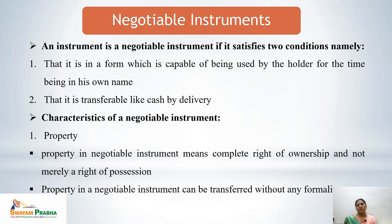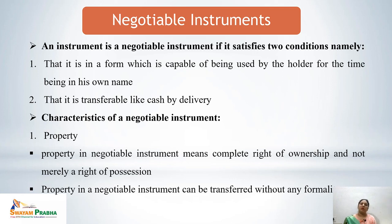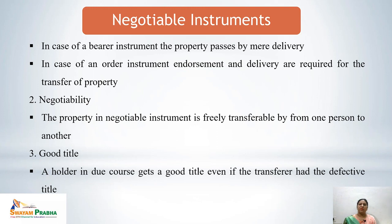The first characteristic of a negotiable instrument is property. Property in a negotiable instrument means the complete right of ownership, not merely possession. Simply handing over a cheque to keep does not make it negotiable. Negotiability means that with the possession of the instrument, the right of ownership is also transferred. Property in a negotiable instrument can be transferred without any formality, in the same form as before the transfer.